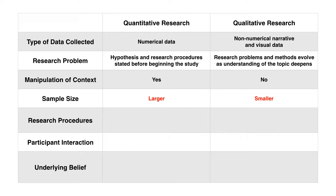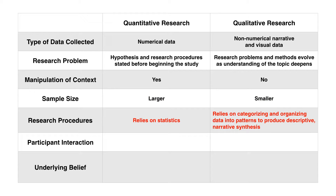In quantitative research, the sample size must be larger to have any viable conclusions. For qualitative research, the sample size can be much smaller because it's very descriptive in nature. Quantitative research relies on statistics, whereas qualitative research relies on categorizing and organizing data into patterns to produce descriptive narrative synthesis.